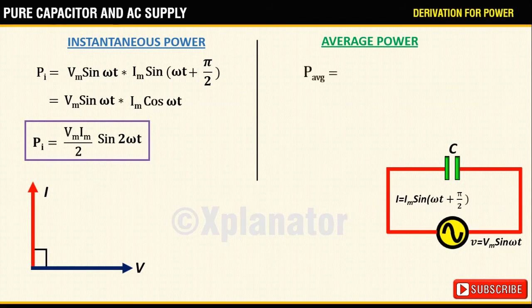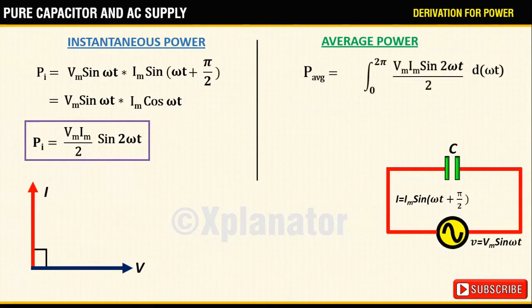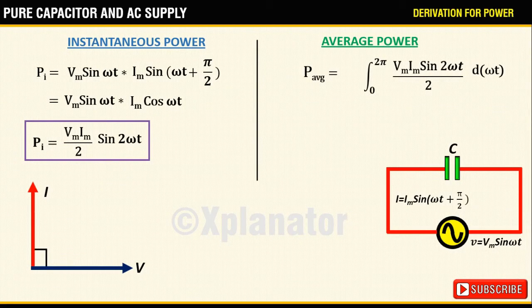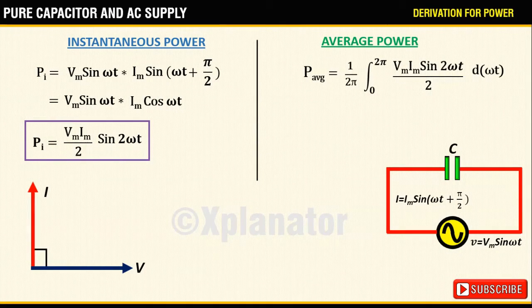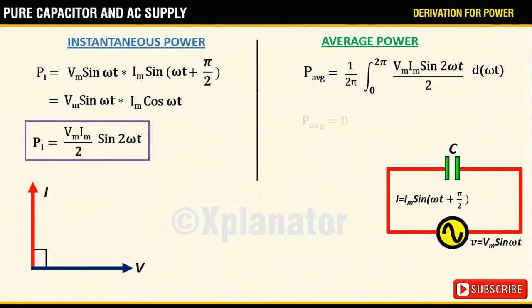For average power, find the average value of this equation. So integrating it over the cycle from 0 to 2 pi and dividing it by the total time interval, you will get the final answer to be 0.